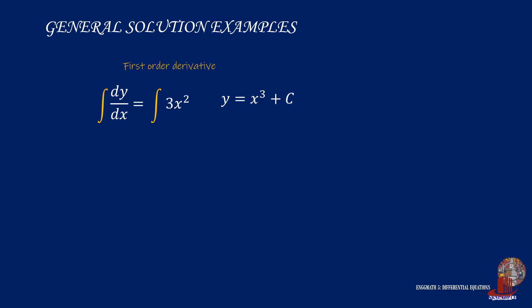On the right side, 3 is extracted out and the integral of x squared is x cubed over 3, which cancels out the constant 3. Thus, the general solution for the DE is y equals x cubed plus c, where c is the arbitrary constant that appears in the general solution.